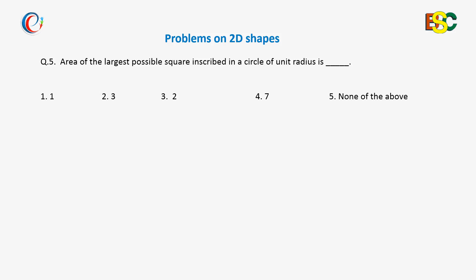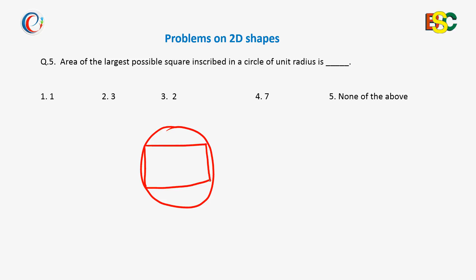The question asks for the area of the largest square inscribed in a circle of unit radius. There is a circle in which a square is inscribed, and we have to find the area of the square when it is as large as possible. Suppose the square is ABCD and we need to find the maximum possible area.